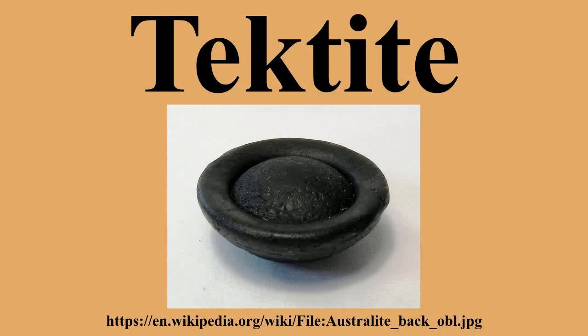Microtektites are typically found in deep-sea sediments that are of the same ages as those of the four known strewn fields. Microtektites of the Australasian strewn field have also been found on land within Chinese loess deposits, and in sediment-filled joints and decimeter-sized weathering pits developed within glacially eroded granite outcrops of the Victoria Land, Trans-Antarctic Mountains, Antarctica.